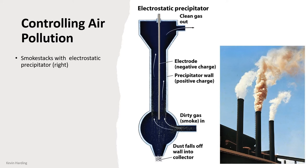As engineers, we have a responsibility to firstly reduce air pollution at the source. If we cannot remove it at the source, we need to control or mitigate it. One way is to use an air stack fitted with an electrostatic precipitator. The dirty gas enters, travels up the stack, and is subjected to an electrostatic field — a positive charge on the wall and a negatively charged rod down the middle.